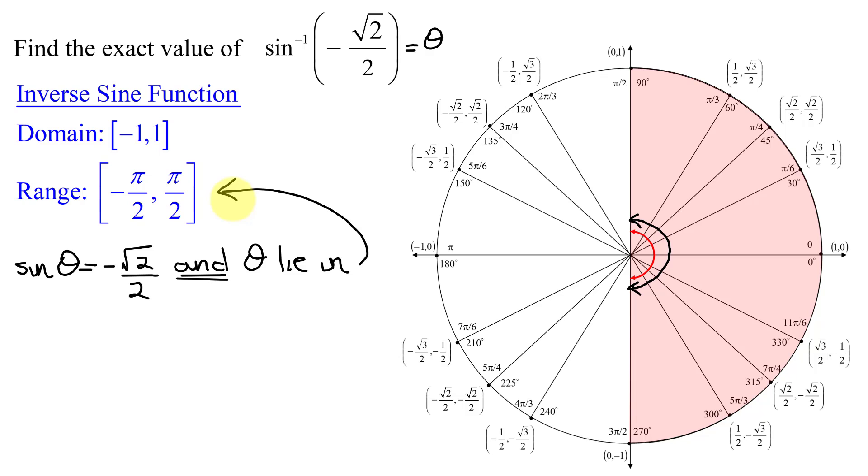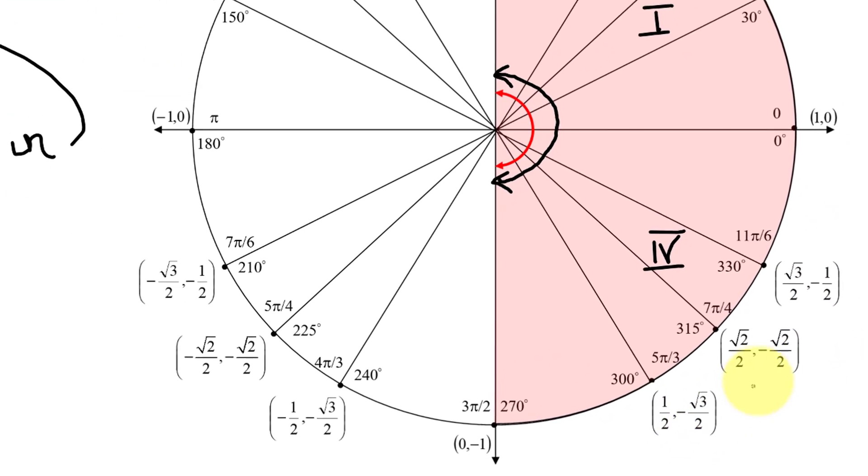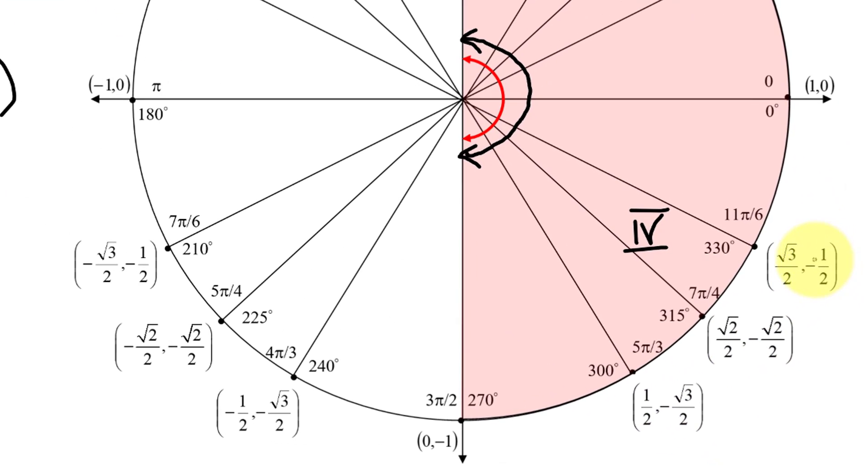These restrictions on theta mean my angle must either lie in quadrant 1 or quadrant 4. I'm looking for the sine of theta being a negative number. Remember, the sine of theta is the y-coordinate of points on the unit circle. They're positive in quadrant 1, and they're negative in quadrant 4. So my angle must lie in quadrant 4, and here's the point whose y-value or sine-value is negative the square root of 2 over 2. So this is the angle that produces it.